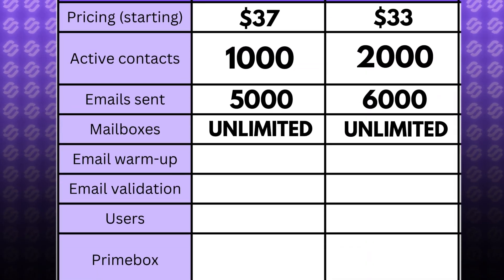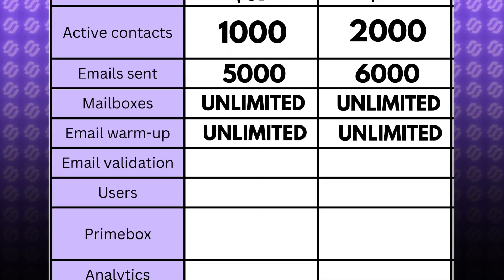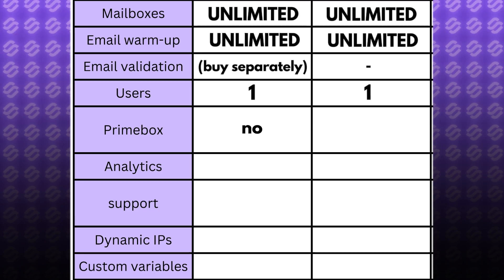And yes, this does include follow-up emails as well. You can have unlimited mailboxes in both Instantly and Smartlead together with unlimited email warm-up. The biggest disadvantage of Instantly's lowest tier plan is that it does not include a unibox, meaning you cannot manage all of your emails in one place. You have to log into each and every mailbox, check for positive replies, and reply there manually.